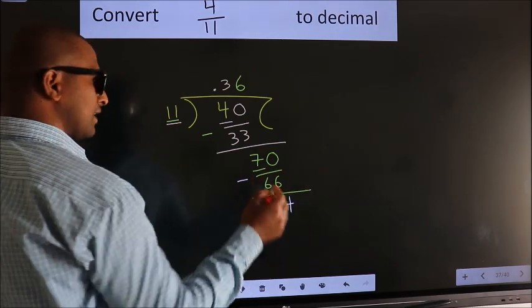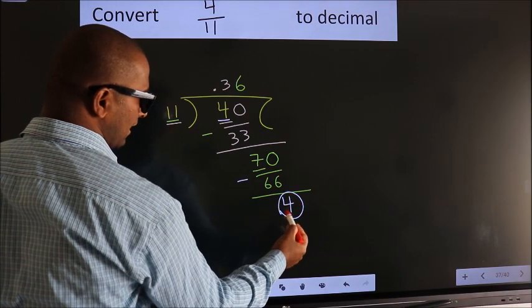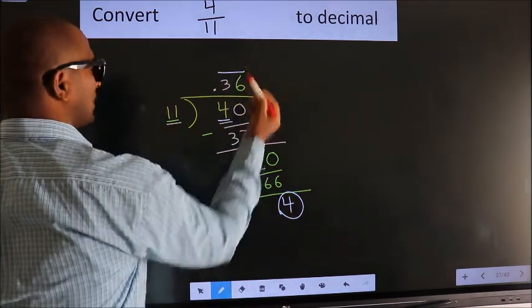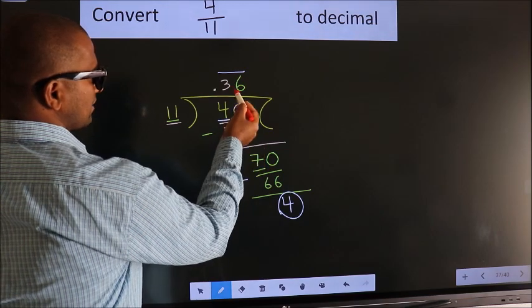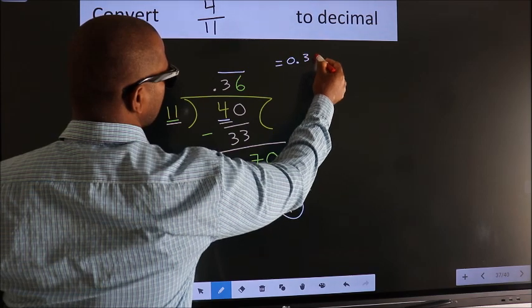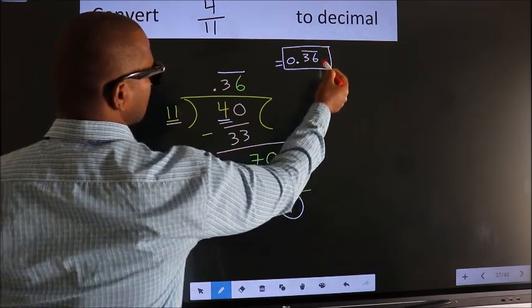Remember, earlier we had 4, we got 4 again. That means we get bar on these two numbers. Therefore, our answer is 0.36 bar on these two numbers is our answer.